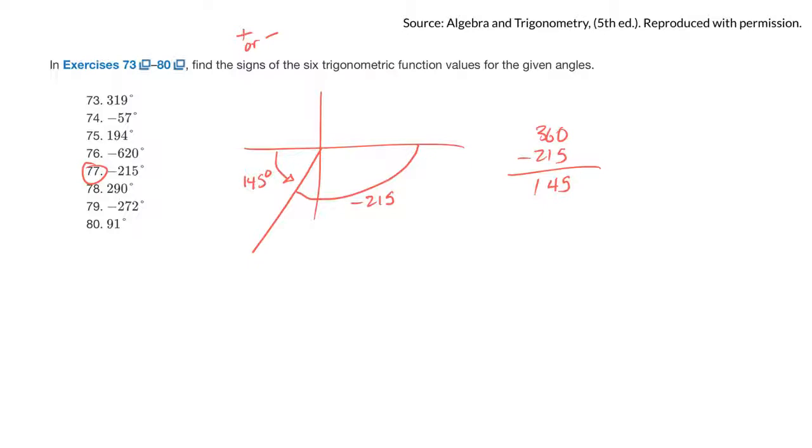So over here, I know because y is negative, because we're below this axis, sine theta has to be negative. Also because I'm to the right of the y axis, the cos theta also must be negative.